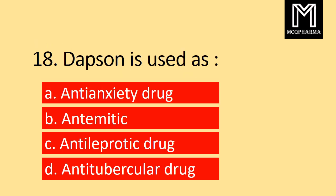Question number 18. Dabson is used as: Option A anti-anxiety drug, Option B anti-emetic, C anti-leprotic drug, Option D anti-tubercular drug. Correct answer: Option C anti-leprotic drug.